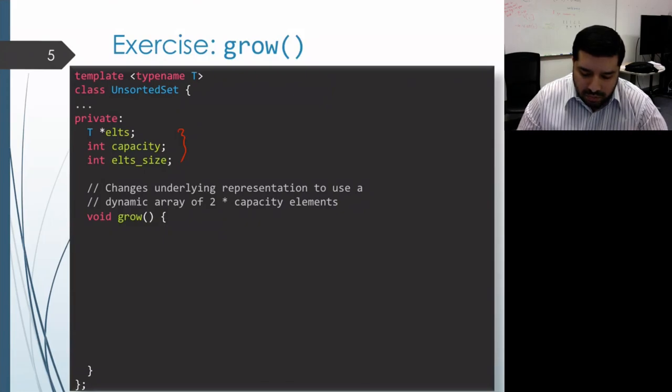All right, so let's go ahead and implement this. The first thing we need to do is actually allocate our new array that's going to be twice as big. We won't actually store its address directly into the els variable yet, because we still need access to the old array in order to copy elements out of it.